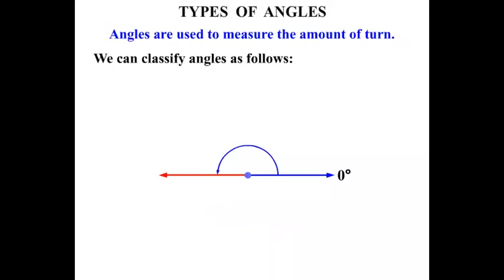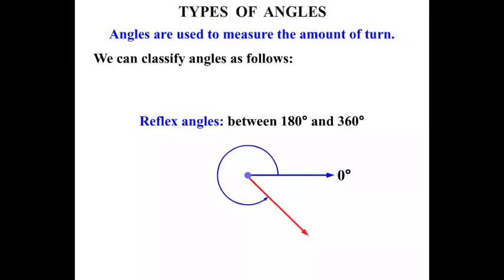Now we can go further. We keep going around. We're now into reflex angles, and they are between 180 degrees and 360 degrees. We're almost a full circle. And if we continue on the next turn there, we're up to what we call 360 degrees. We have turned a full circle.